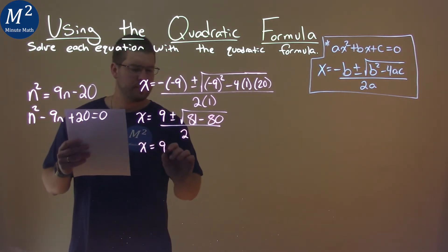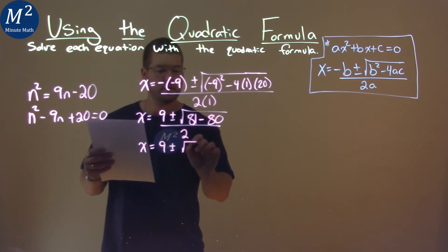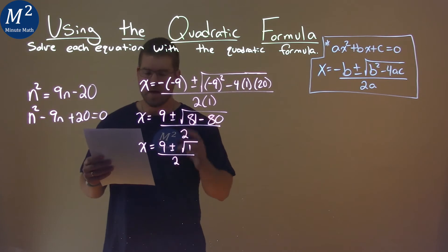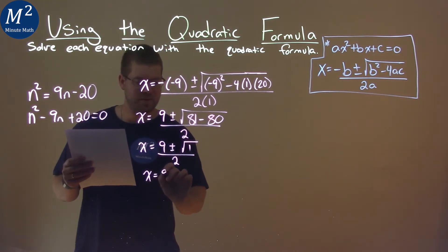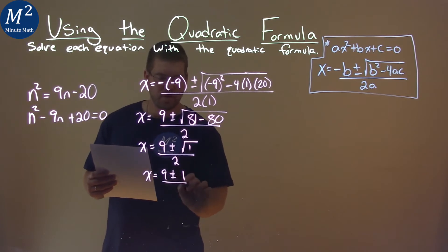Take our time here. x equals 9 plus or minus, and square root of 81 minus 80 is just 1, all over 2. Keep going, x equals 9 plus or minus square root of 1 is 1 over 2.